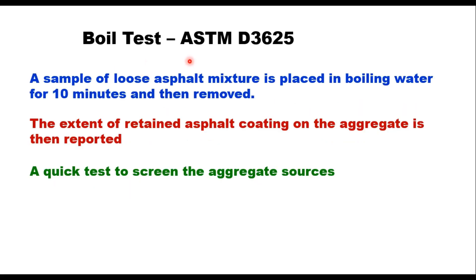The boil test, given in ASTM D3625, is a quick and easy visual indication of chemical incompatibility between the asphalt binder and aggregate. In this procedure, a sample of loose asphalt mixture is placed in boiling water for 10 minutes and then removed. The extent of retained asphalt coating on the aggregate is then reported. The boil test is a loose mix test and is used to characterize the bonding between asphalt and aggregate, i.e., adhesion. Tests run on compacted samples characterize both adhesion and cohesion properties. Still, it is a quick test to screen the aggregate sources.